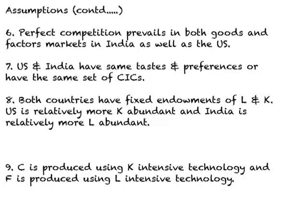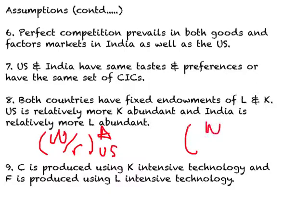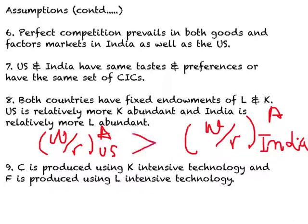We can make a formal comparison: wages divided by rent in autarchy in the U.S. must be greater than wages divided by rent in autarchy in India. The ninth assumption is that clothing is produced using capital-intensive technology, and food is produced using labor-intensive technology.